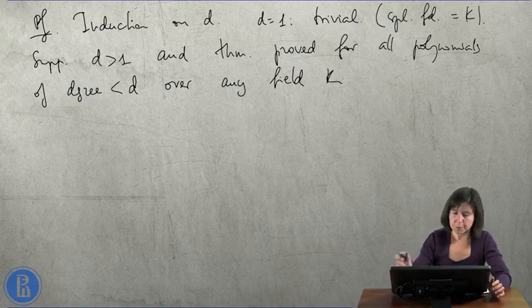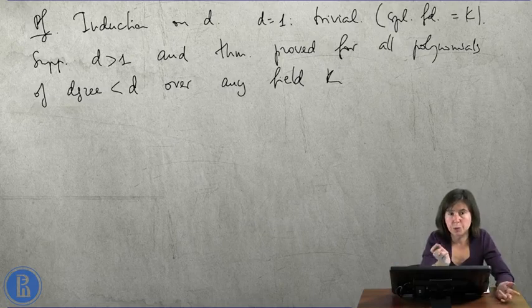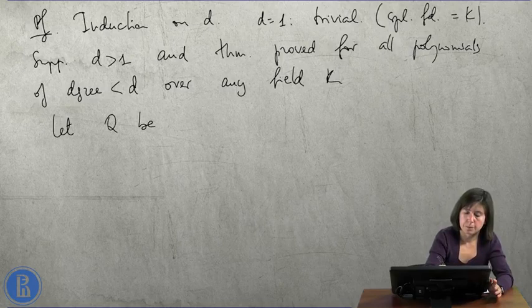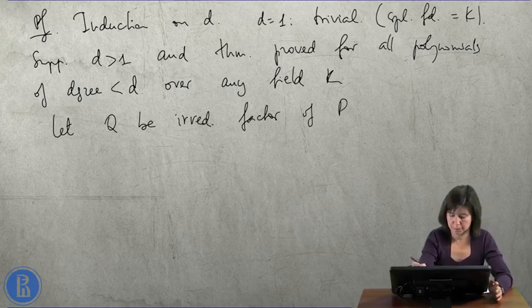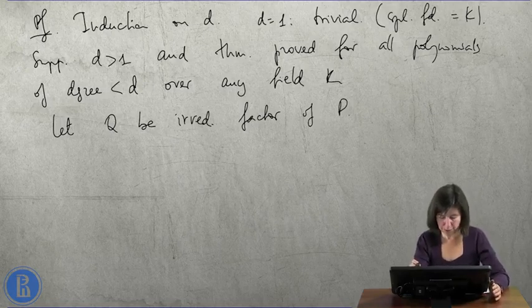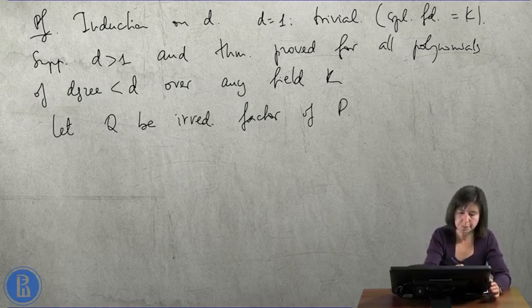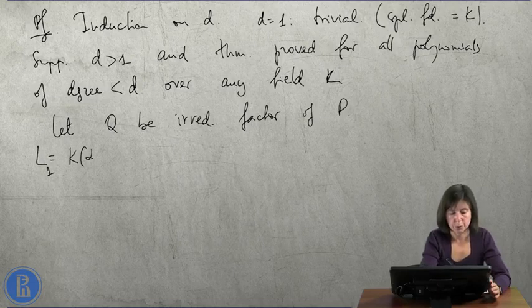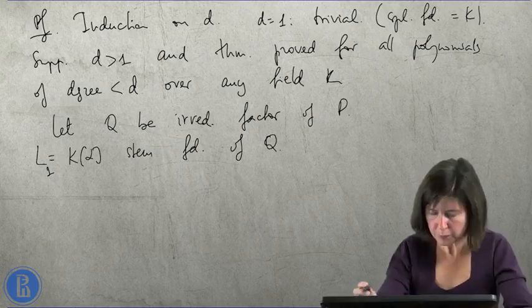strictly less than d over any field k. Then what we do is we take an irreducible factor q of p. And let alpha be a root, so L1 is k of alpha,